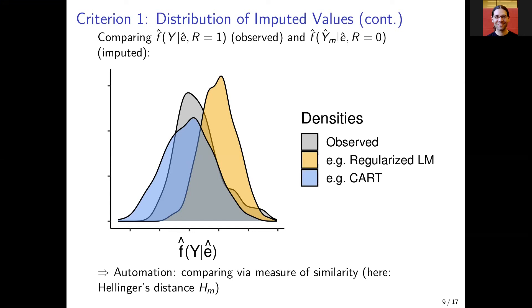Instead of looking at the picture, we can also do that in a more automated fashion by just using a measure of similarity for densities. Here I'm using the Hellinger's distance.